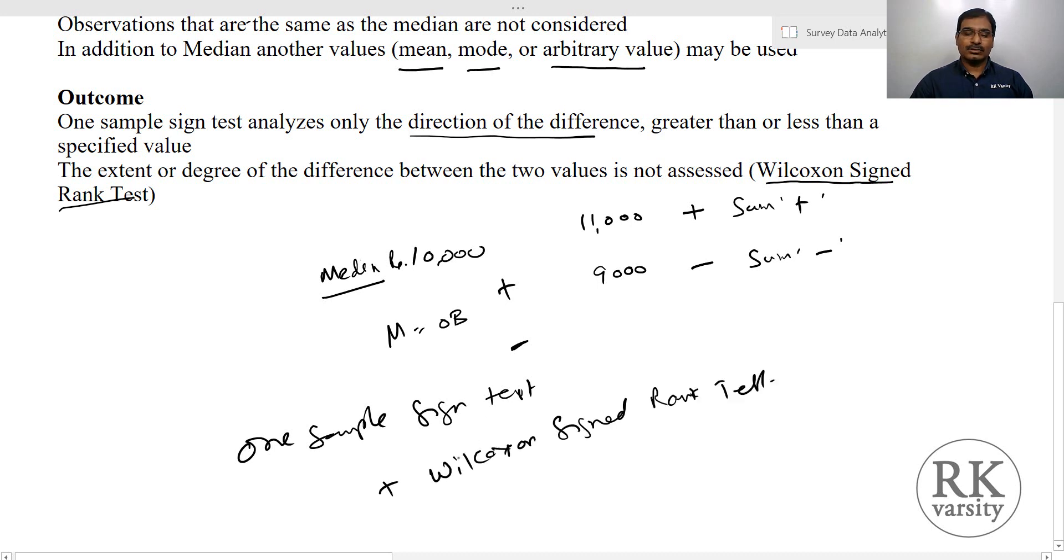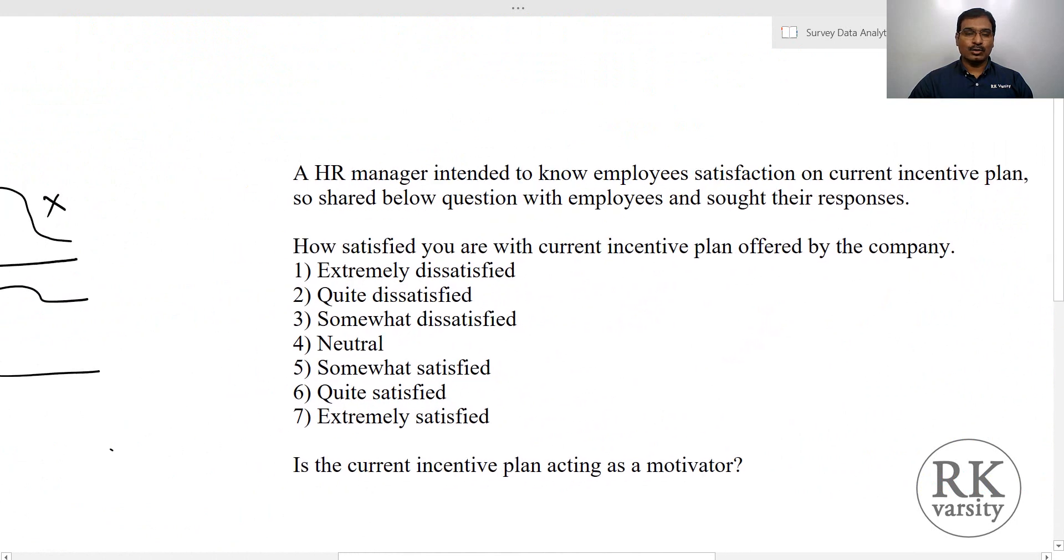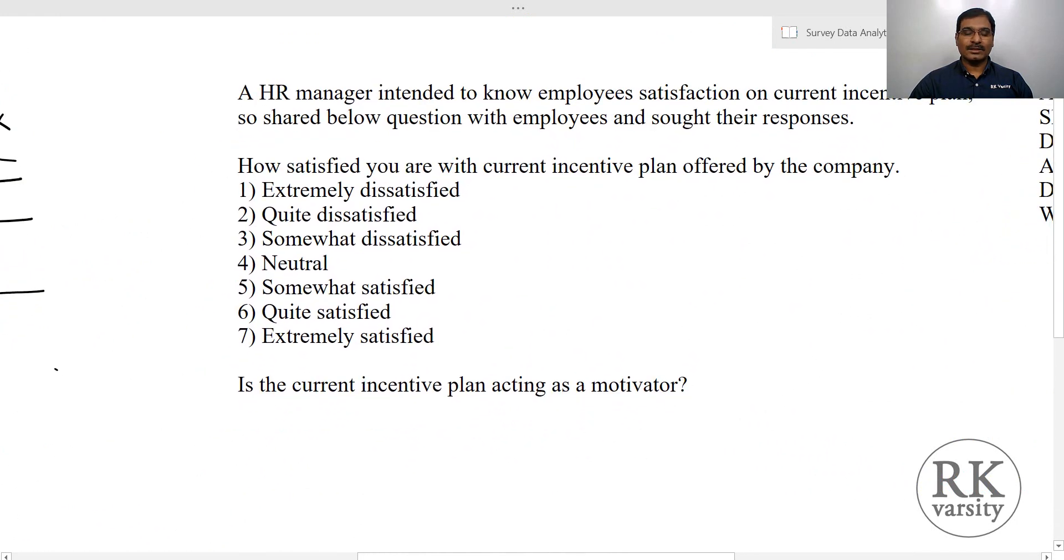These two tests are calculated together in the sense that one sample sign test will give you the difference, that is the direction of a difference, and Wilcoxon will tell you the intensity or size. In this lecture, I will explain you one sample sign test, and in my next lecture, I will explain you Wilcoxon signed rank test. So here for this purpose, I choose two examples. Here is my first example.